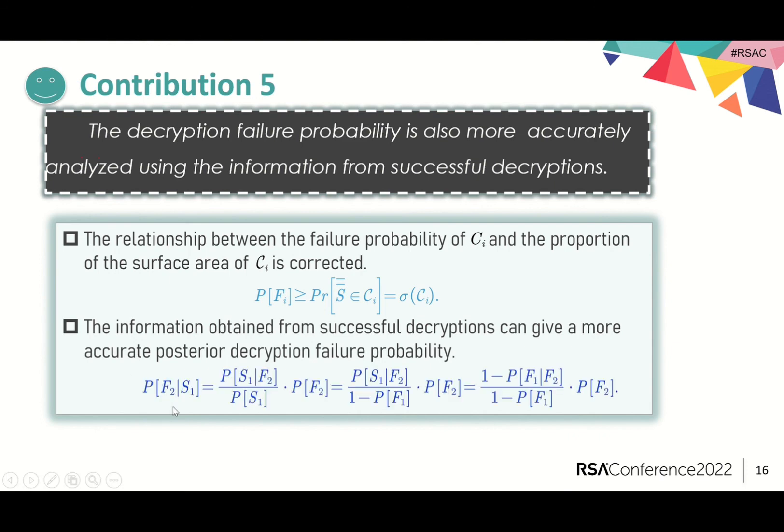Let's take the case of two queries, C_1 and C_2. Based on the fact that C_1 has already been successful, the posterior failure probability of C_2 can be calculated by this formula. It can be seen that the value of the probability of F_2 given condition S_1 depends primarily on the value of the probability of F_1 given condition F_2.